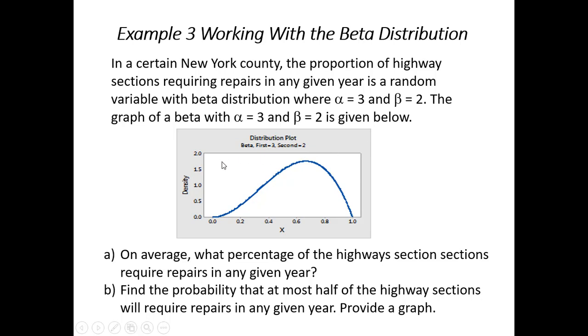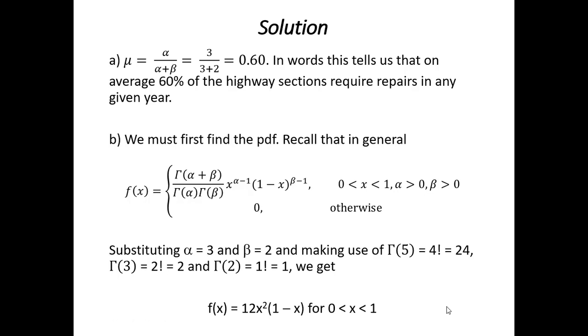All right, so, after some data analysis, people find out that the proportions sort of vary and follow a beta distribution where alpha is 3 and beta is equal to 2. You can see here's a plot of the PDF. So, let's say we ask, on average, what percentage of the highways or the highway sections require repairs in any given year? Part B, find the probability that at most half of the highway sections will require repairs in any given year.